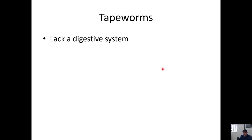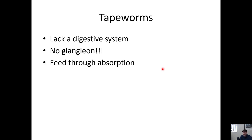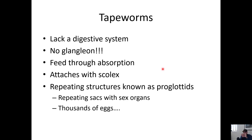Tapeworms are one of the parasitic varieties of flatworms - they don't even have a digestive system. Think about why: they live inside of digestive systems. They also lack ganglia, eyes, and sense organs - they don't need the brain their free-living counterparts have. They feed simply through absorption through their flat bodies. They have hooks at the front called a scolex which attaches to the intestines, and repeating structures called proglottids - each segment has egg-producing sex organs and can break off and be excreted to spread eggs into the environment.